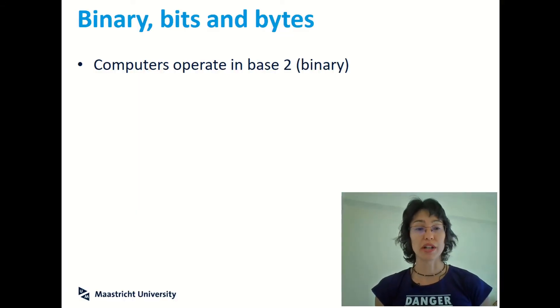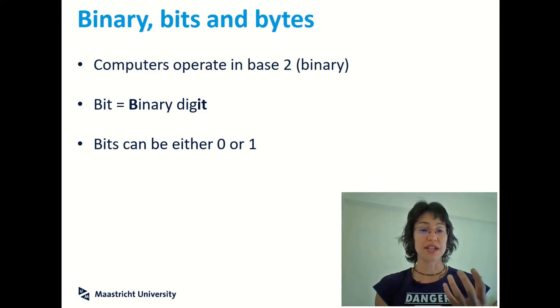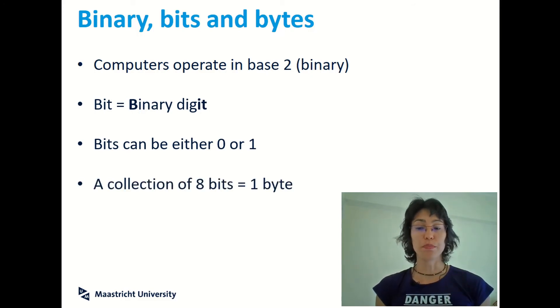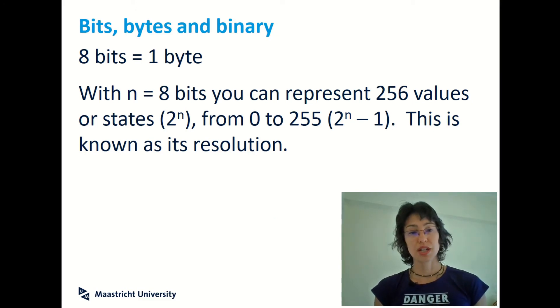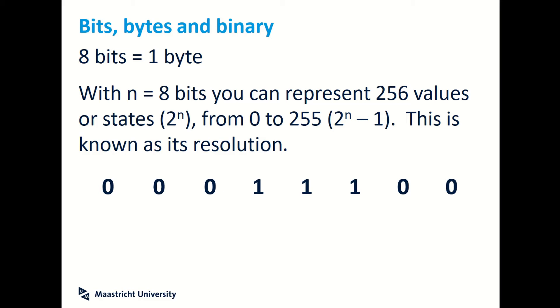Computers operate in base-2 or binary, and then information is processed in just two different ways, either in a zero or in the form of a one. These digits, zero or one, are known as binary digits or bits. A collection of 8 bits in total gives you one byte of information. With 8 bits in 1 byte, you can represent 256 values or states. So here you've got 8 bits of information. If they were all zero, then you have a value of 0, and if they were all 1, you have a value of 255. So it's possible to count between 0 and 255, so we get a total of 256 different states. You can calculate that by doing 2 to the power of n, where n is the number of bits, and that's also known as its resolution.